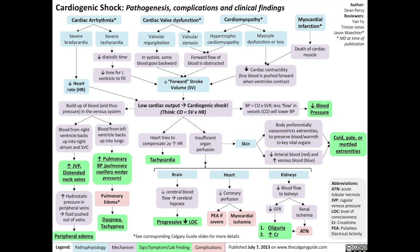The heart tries to compensate for this reduced cardiac output by increasing the heart rate, which leads to tachycardia. Insufficient organ perfusion is reflected in the skin, brain, heart, and kidneys.